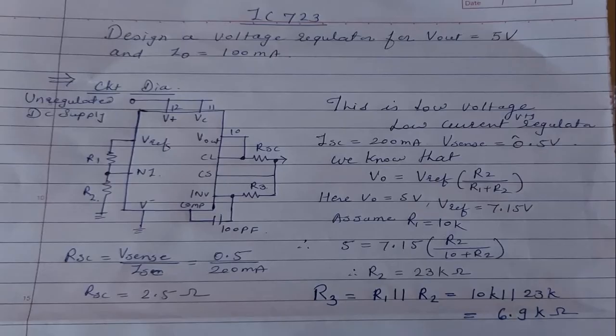IC723 is a 14-pin IC. We can configure IC723 in four modes. The first one is the low voltage, low current mode — that means if you want to design with Vout less than 7 volts and current less than 150 milliamperes.